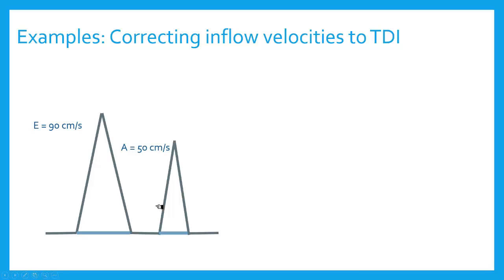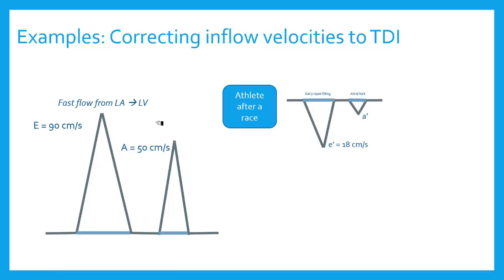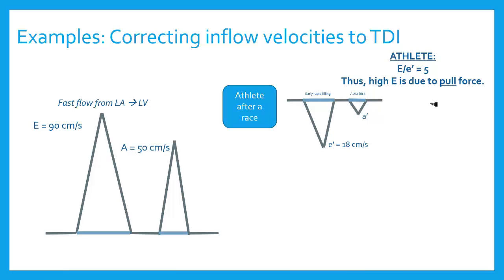Let's take an example. Say I get mitral inflow velocities from pulse wave Doppler of E = 90, A = 50 — pretty fast flow. If I had a young healthy athlete who just ran a race with a vigorously relaxing heart, I might get an E prime velocity of around 18. That means my E velocity is only high because of my pull force. When I do the ratio of E to E prime, that helps me understand how much is pull and how much is push — in other words, E to E prime is a reflection of left atrial pressure. In this athlete, the ratio is considered low, meaning normal left atrial pressure; the E velocity is only high because of a strong pull function.